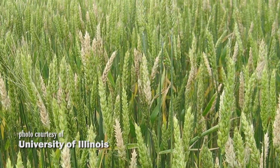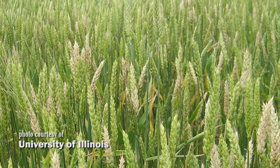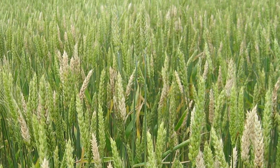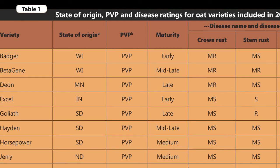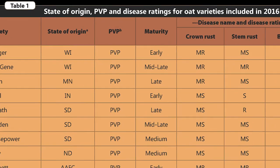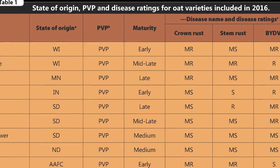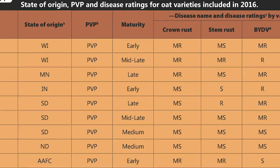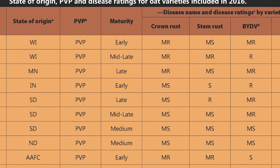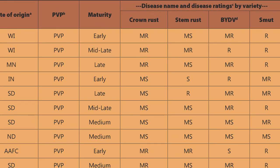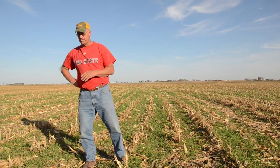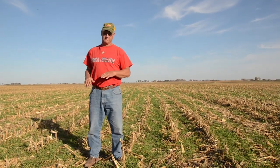With some diseases such as fusarium head blight, corn is an alternate host, so avoiding planting small grains into cornfields is one way to reduce disease risk. In addition, choosing resistant varieties can help reduce yield and test weight loss when disease pathogens are present. For conventional farmers, timely application of the correct fungicide is another way to control or lessen the impact of a disease — but how do you know if it will pay?